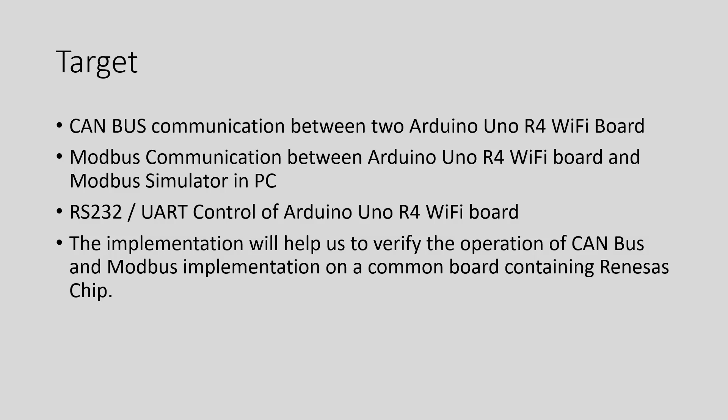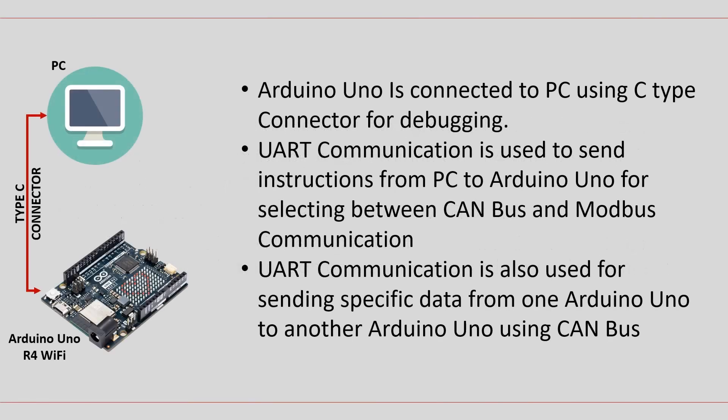The implementation will help us verify the operation of CAN bus and Modbus on a board containing Renesas's RA4M1 microcontroller. In this project, Arduino UNO is connected to PC using a C-type connector for debugging. UART communication is used to send instructions from PC to Arduino UNO for selecting between CAN bus and Modbus communication, and also for sending specific data from one Arduino UNO to another using CAN bus.